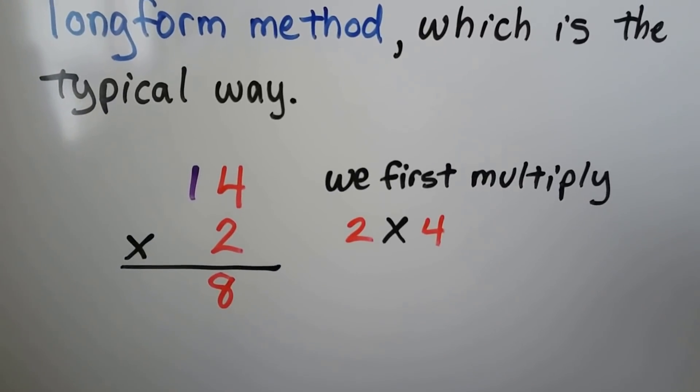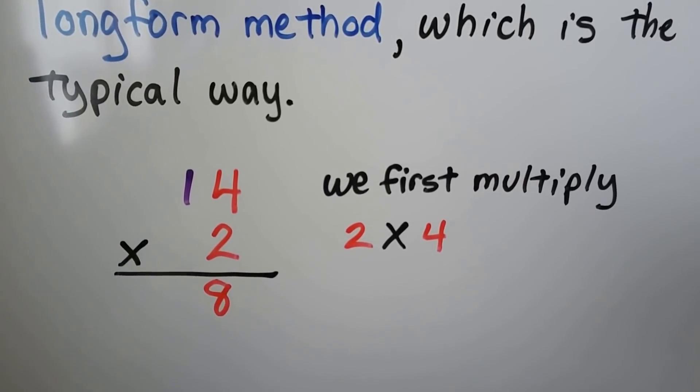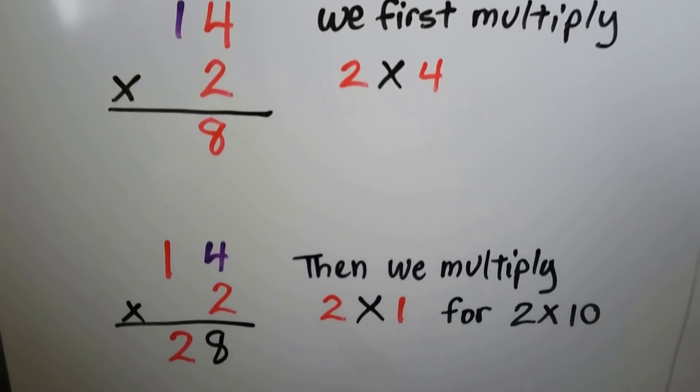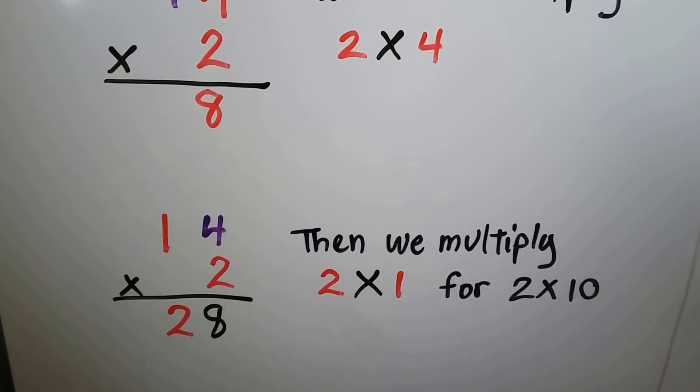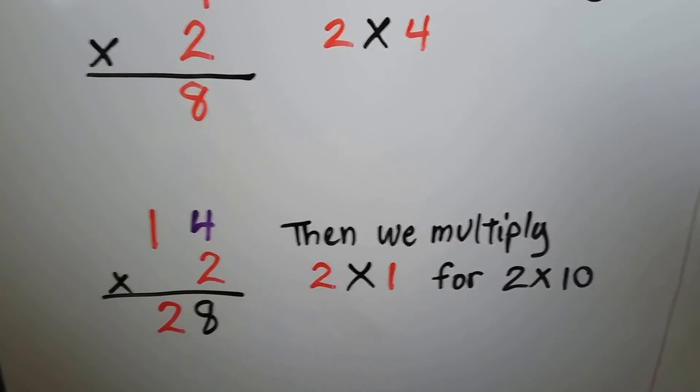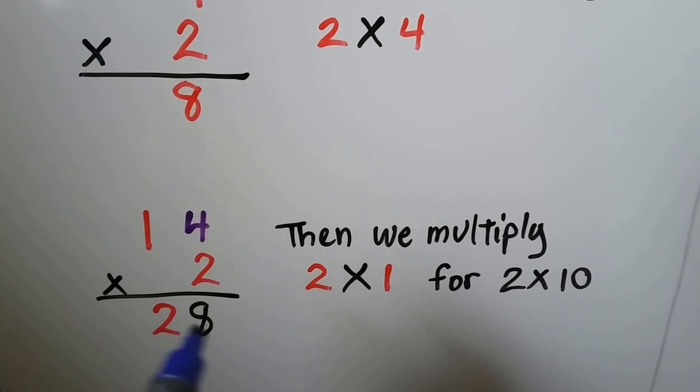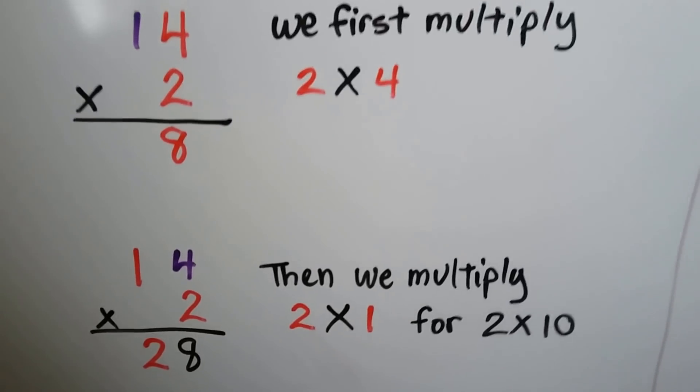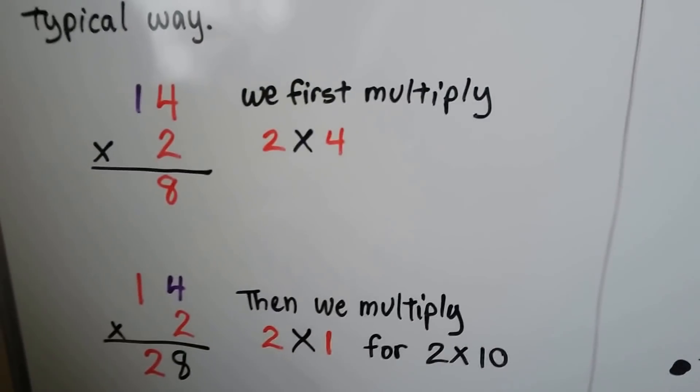We would multiply the 2 times the 4 and get 8. Then we would multiply the 2 times the 1 for 2 times 10, because it's in the tens place. So we would have a 2 in our tens place, and we'd have 28. Well, this is the typical way to do multiplication.